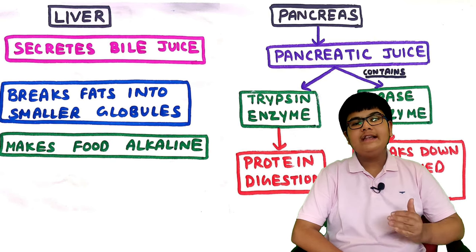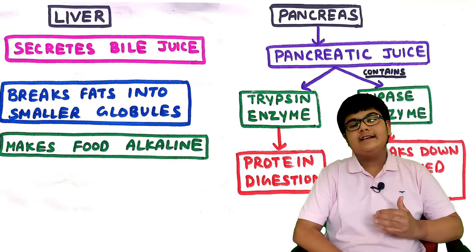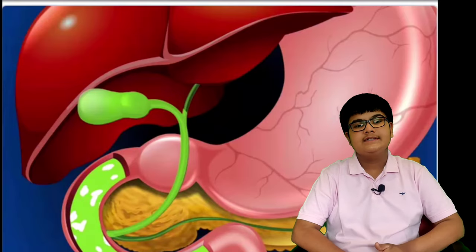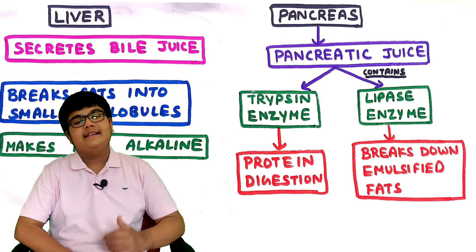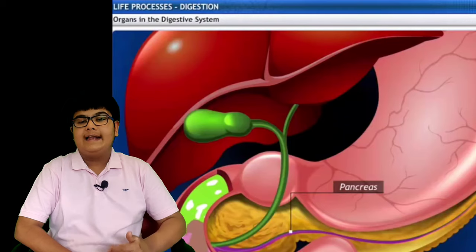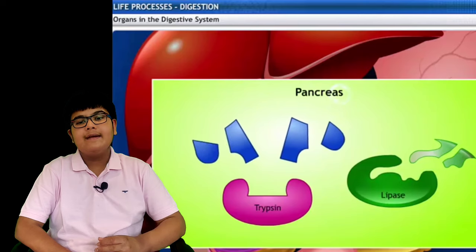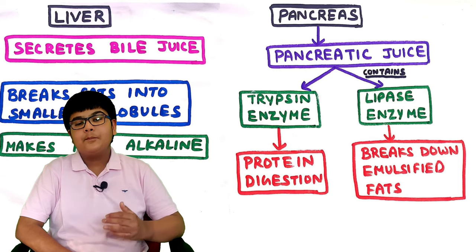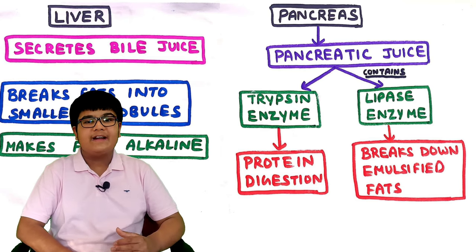The liver secretes bile juice, which breaks fats into smaller globules and makes the food more alkaline. The pancreas secretes pancreatic juice, which contains trypsin enzyme and lipase enzyme. Trypsin helps in protein digestion, while lipase helps to break down emulsified fats.